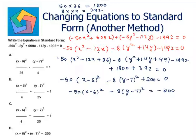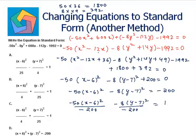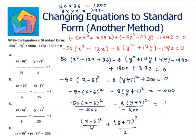Dividing both sides by minus 200: minus 50 times (x minus 6)² over minus 200, minus 8 times (y minus 7)² over minus 200 equals 1. So (x minus 6)²/4 plus (y plus 7)²/25 equals 1 — and sorry, it is y plus 7 whole square. This is the answer for part c.